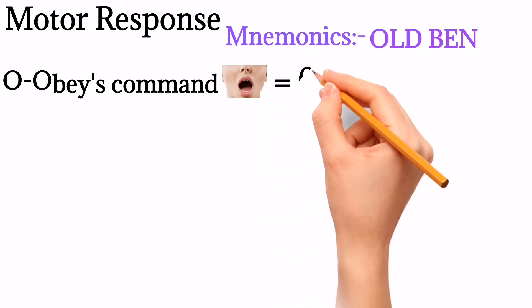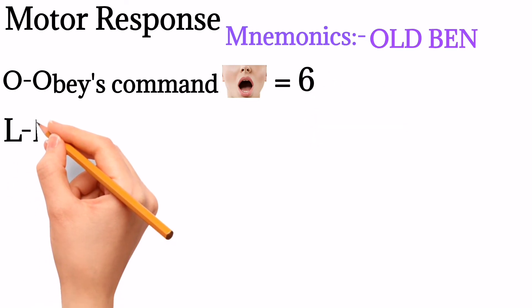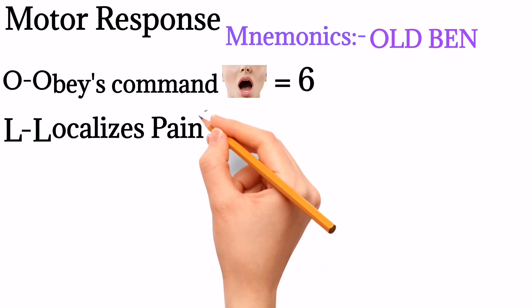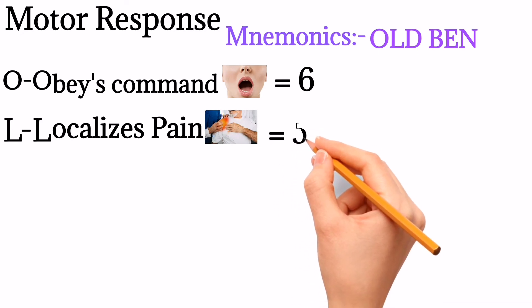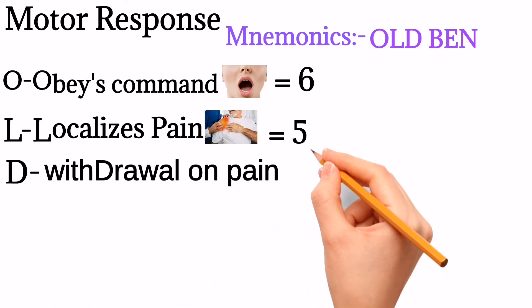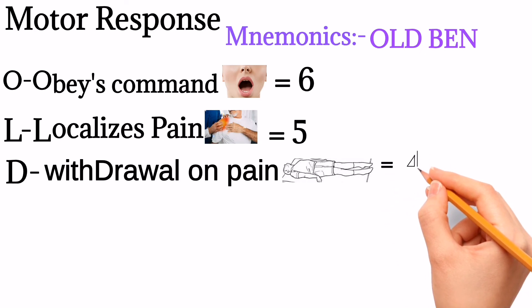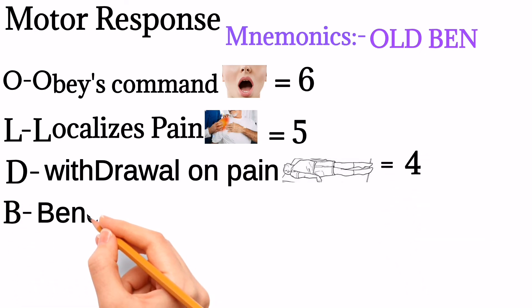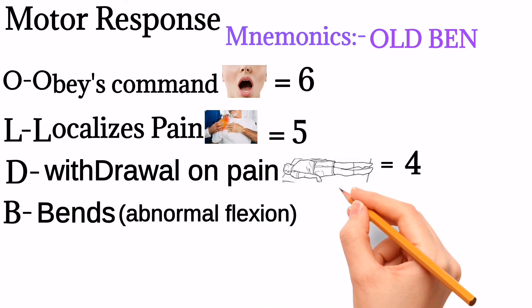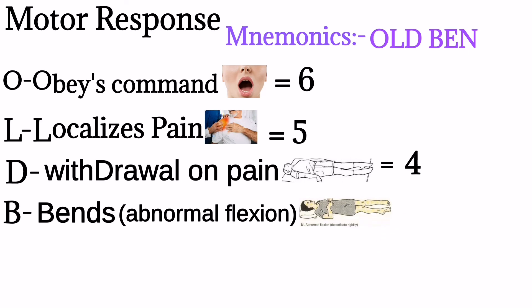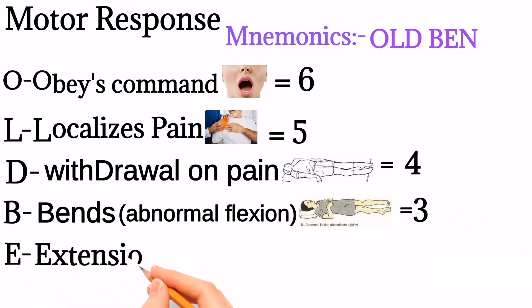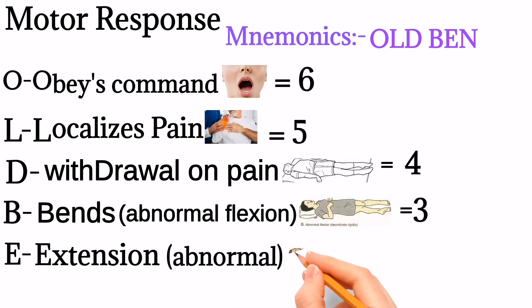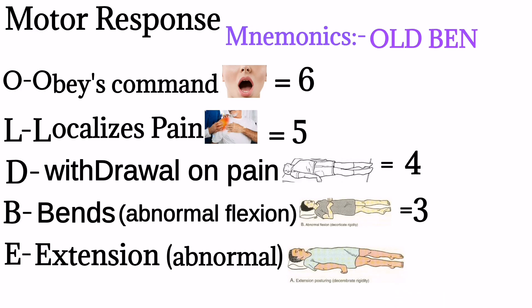Motor response: L is for Localize the pain — you give pain at the trapezius region and the patient exactly localizes the pain, then the score will be 5. D is for withdrawal — if the patient withdraws hands against the pain, then the score will be 4. B is for Bends, that is abnormal flexion — you give pain and the patient abnormally flexes the hand, then the score will be 3. E is for Extension abnormal — you give pain at the arm and the patient abnormally extends the hand, then the score will be 2. N is for No response.